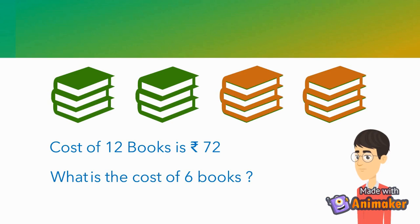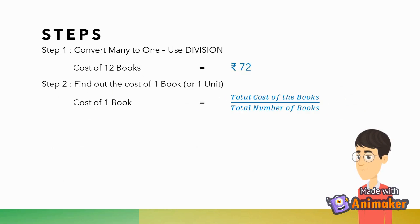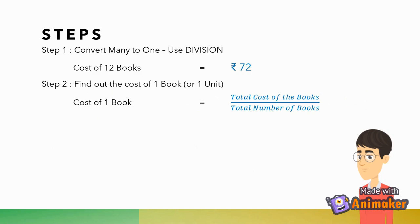Let's try to find it out. First, we will convert many to one using division. Cost of 12 books is 72 rupees. Then, we will find out the cost of one book or one unit. This is why this process is called the unitary method — because we want to find out the value of one unit. In this case, it is one book.